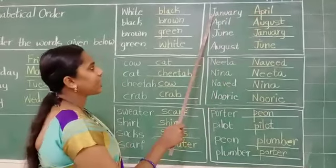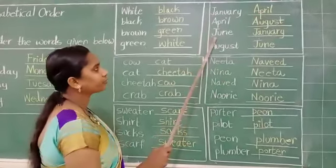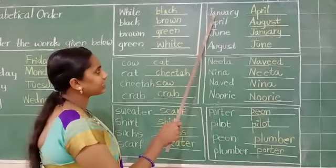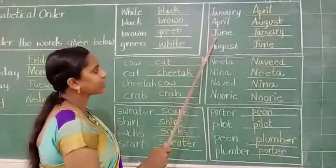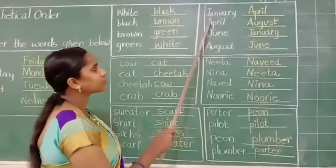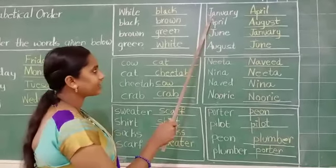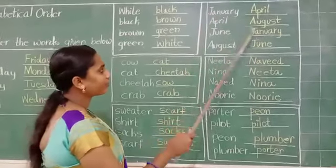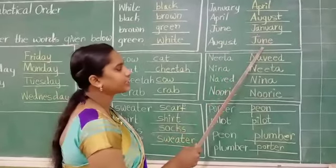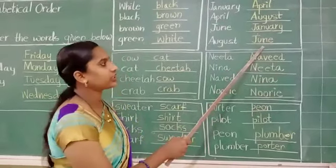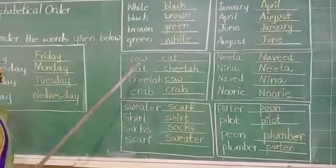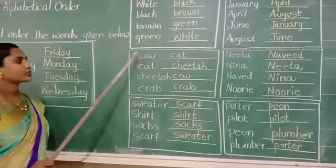Let's see here: January, June. Second letter — J has A, and June has U. A or U, you should write first — A. So the third word is January and the fourth word is June. Okay? Is it clear?